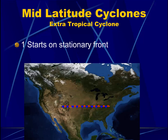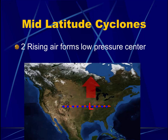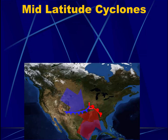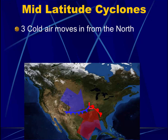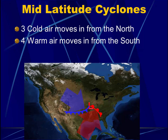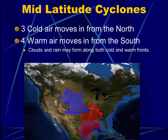Let's review. Mid-latitude or extratropical cyclones start on a stationary front. Rising air forms a low pressure center. Replacement air will move in from the north, and that will create a cold front. Replacement air coming from the south, being warm, will cause a warm front. We may see clouds and precipitation on both the warm and cold front boundaries. If there is any severe weather, it will happen if it is a fast-moving cold front.